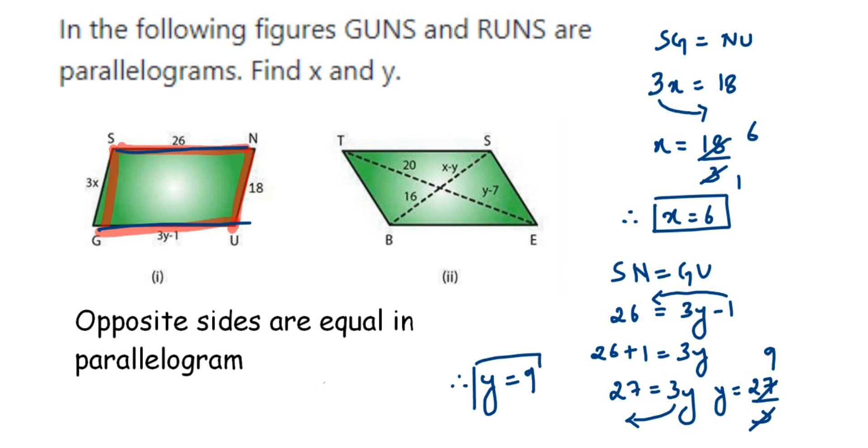So this was the first question where opposite sides are equal. Now look at the second question. We have given the diagonal value. In parallelograms, diagonals bisect each other. Bisect means when they are intersecting, the diagonal length is divided into two equal parts. The intersection point is O, then TO will equal OE and BO will equal OS.